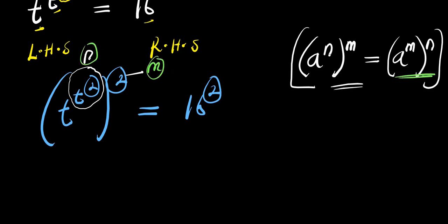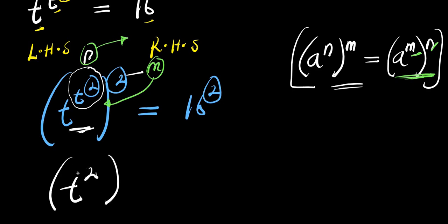We then apply this transformative identity. The m will come inside the bracket while the n will go outside, just like what happens here. So we are going to have t — remember the base is still the same — we have t as the base. We now have our m, that is power 2. And raised to the power of our n, that is t power 2. This is exactly what we have been looking for — we want to have the base and the exponent to be the same. And this equals 16 to the power of 2.